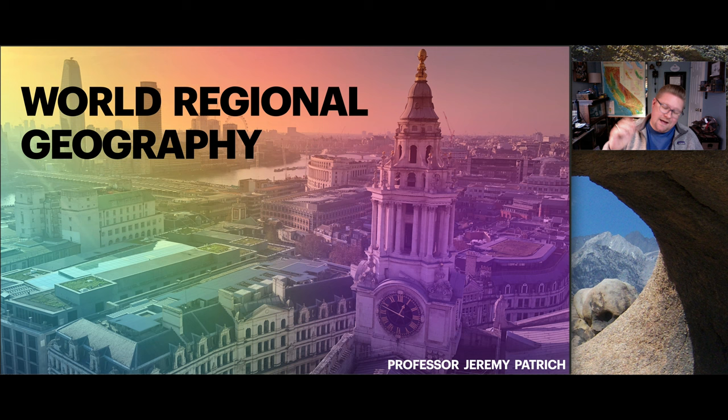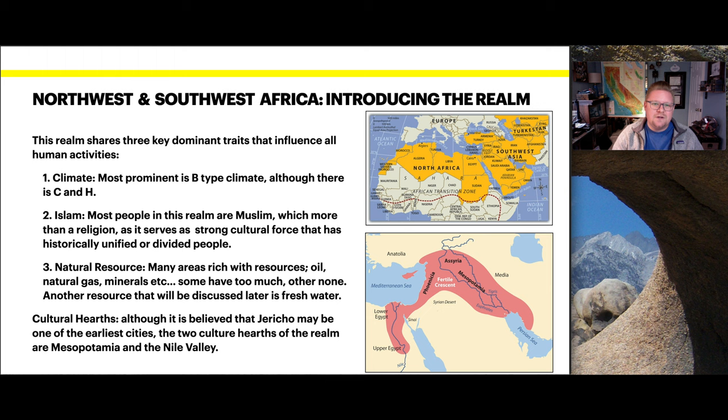Hey there, welcome back for another presentation in your World Regional Geography course. This time we're going to introduce the realm of Northern Africa and Southwest Asia. This realm shares three key dominant traits that influence all human activity: first is climate, second is Islam, and the third is natural resources.